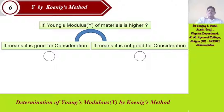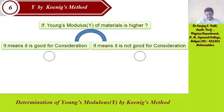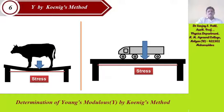If Young's modulus of a material is higher or lower, what will happen? If Young's modulus is higher, it means the material is good for consideration; if lower, it is not good. We will find the answer after completing this experiment. At present we are finding Young's modulus using Koenig's method.